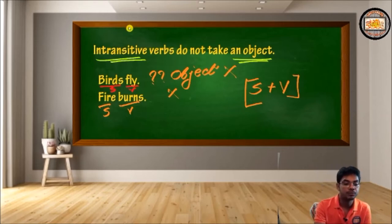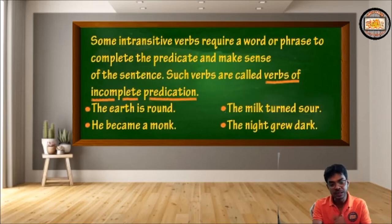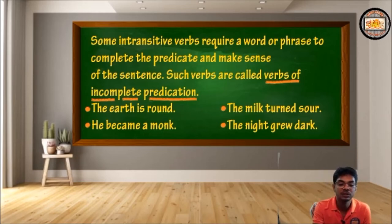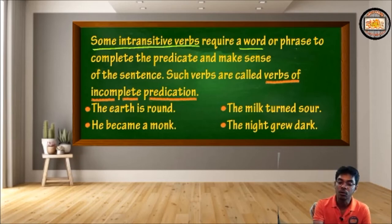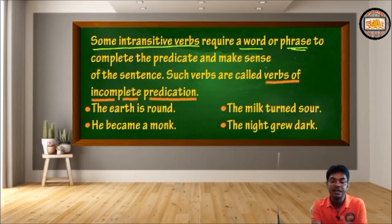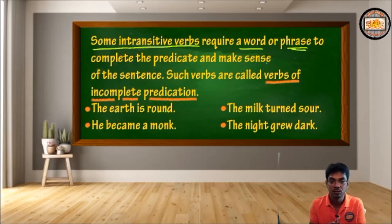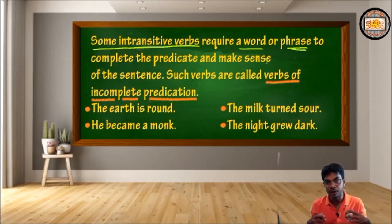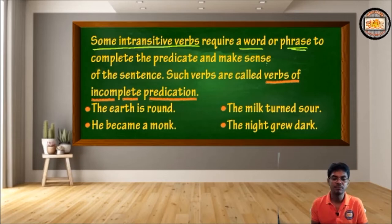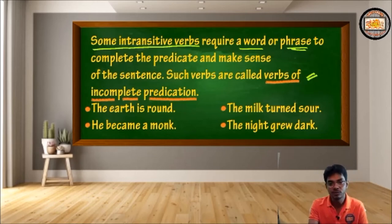But where does the problem appear? Some intransitive verbs — not all, only some — require a word or a phrase to complete the predicate and make sense of the sentence. Where the intransitive verb is unable to complete the predicate without such support, these verbs are called verbs of incomplete predication. They fail to complete the predicate — that's why they are called verbs of incomplete predication.